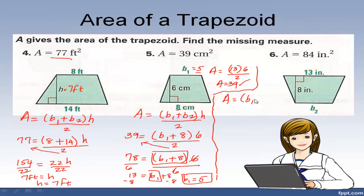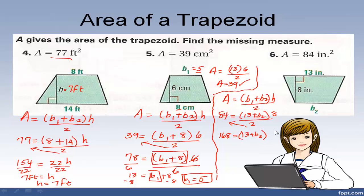For the last one, write your formula: B sub 1 plus B sub 2 times h over 2. Area is 84, equals B sub 1 which is 13, plus B sub 2, times h which is 8, divided by 2. Cross multiply: 84 times 2 is 168, equals 13 plus B sub 2 times 8. Divide both sides by 8: 21 equals 13 plus B sub 2. Subtract 13 from each side: B sub 2 equals 8.